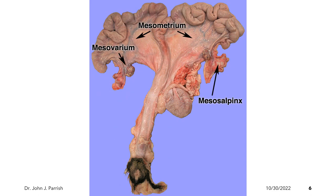The suspensory tissue which supports the ovaries, the oviduct, uterus, cervix, and the anterior vagina is the broad ligament. It supplies the vascular system, lymphatic drainage, and nerves to the tract. The portion which attaches to and supports the ovary is known as the mesovarium. The oviduct is surrounded and supported by the mesosalpinx. The uterus is supported by the mesometrium.